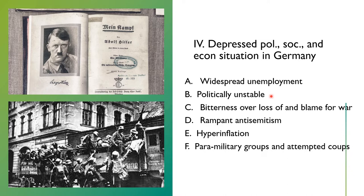There wasn't a lot of support in Germany for the Weimar Republic. Many people, including Hitler, often and loudly proclaimed that it was a stab in the back. During the war, Germans only received war news that put Germany in a good light, so most Germans believed they were winning the war. When defeat came, it was a shock to many. Because the Weimar Republic government were the ones that signed the Versailles Treaty, it did not have a good reputation in Germany, and it created a great deal of bitterness over the loss of and blame for the war.